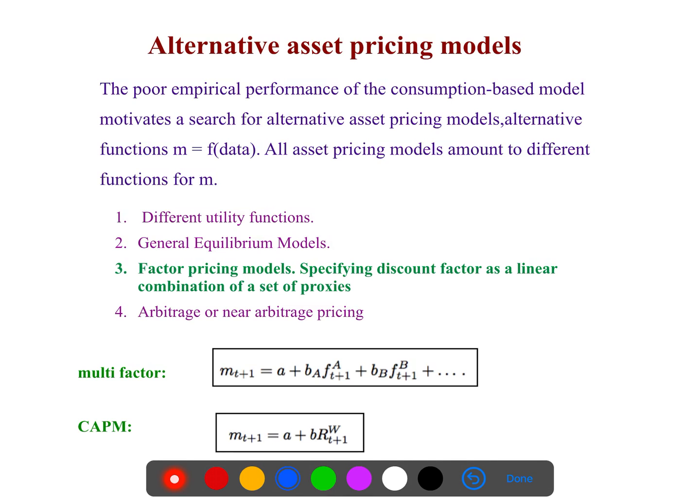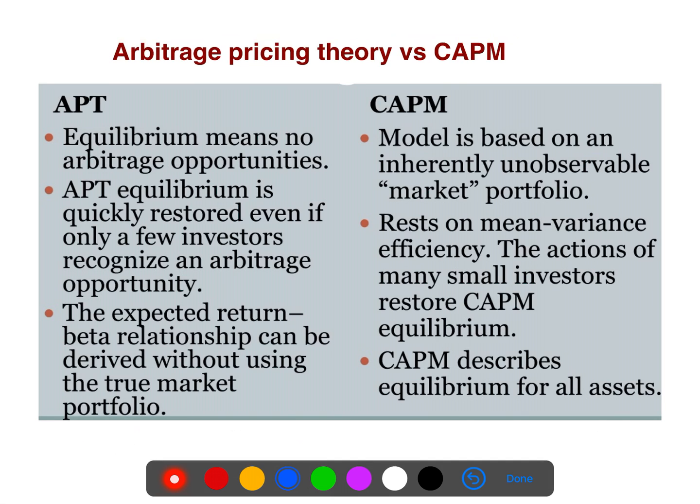We have alternative asset pricing. If you have different utility functions, you can define it with general equilibrium models. But if you use factor pricing models, for example, F could be value, it's size, it's quality. You have 50 different factors - more than 50 different factors. Or you will simply use the CAPM - you care about the market and the beta. In any case, you can define your own model of stochastic discount factor.